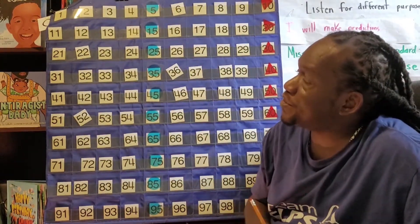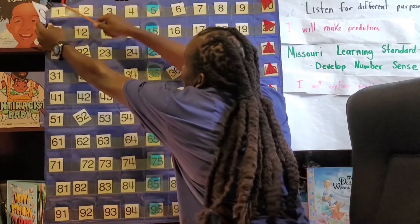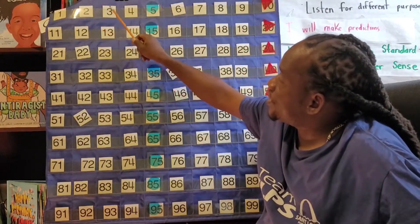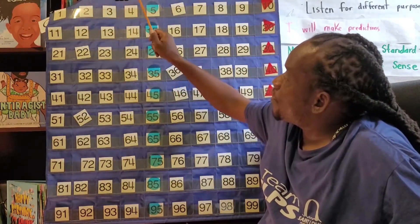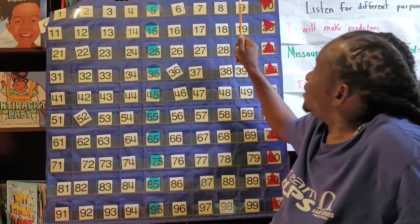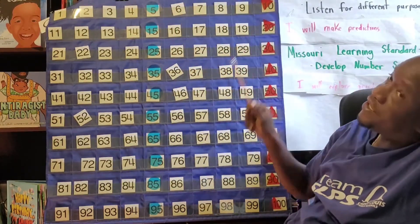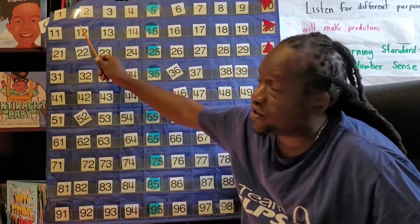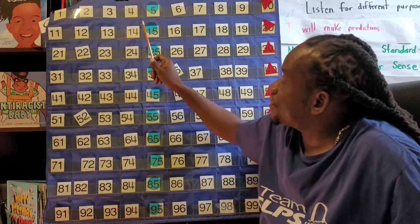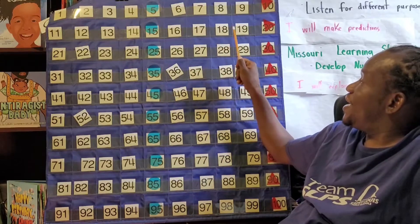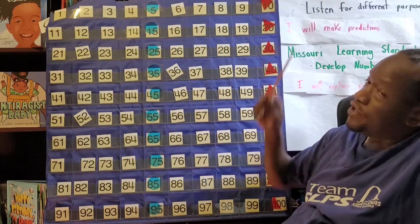Zero, one, two, three, four, five, six, seven, eight, nine, ten. Slow down a little bit. We're going to count together. Eleven, twelve, thirteen, fourteen, fifteen, sixteen, seventeen, eighteen, nineteen, twenty.